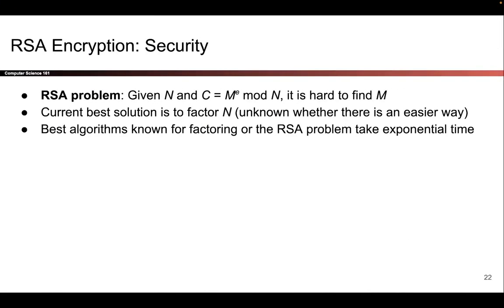The security of RSA encryption is based on something called the RSA problem, which states that if someone tells you N and they also tell you the ciphertext M to the E mod N, it is very hard for you to reverse this operation and find the original M.